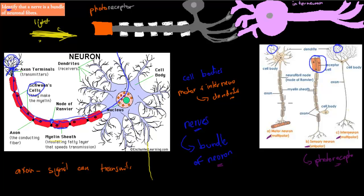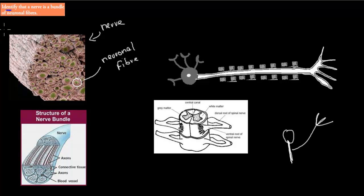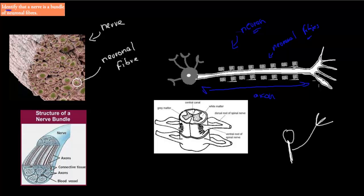I'll go into more detail in the next videos. The actual dot point is quite simple — it says 'identify,' which means recognize that the nerve is a bundle of neural fibers. All you need to know is that this is a nerve cell, or a neuron. They have these long axons, and because they're long, we often call them neural fibers. A fiber is just a long strand, so the whole thing is called a neural fiber. So a nerve is a bundle of these neural fibers — it's not just one neuron, it's a lot of neurons.